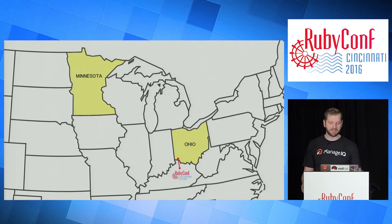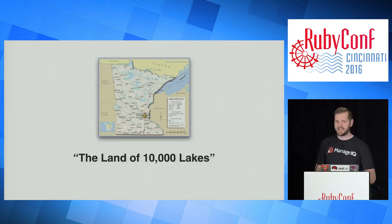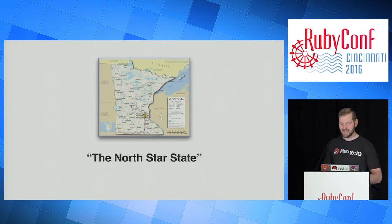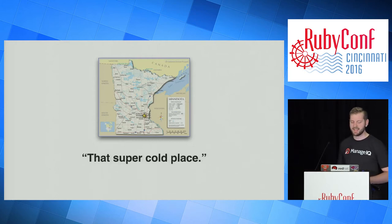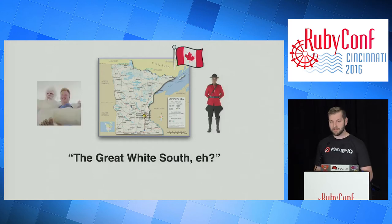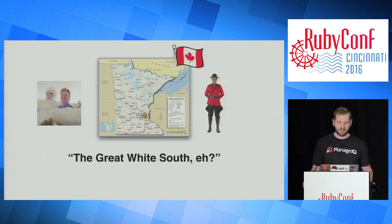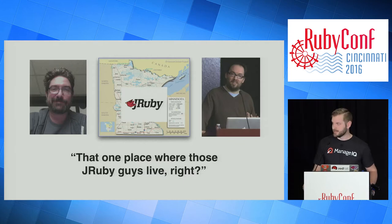Minnesota goes by a bunch of different names you've probably heard of. One is the land of 10,000 lakes. There's the North Star State, that super cold place. If you're from Canada, you might know it as the Great White South. And if you're at a Ruby conference like this one, you might vaguely remember it as that one place where those JRuby guys live.